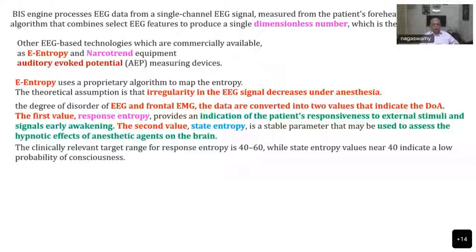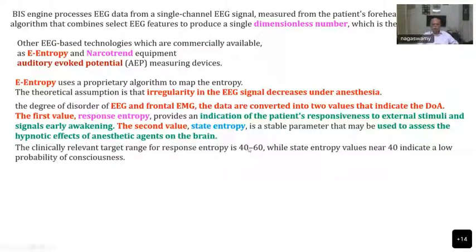The clinically relevant target range for response entropy is 40 to 60. The BIS monitor also has a similar target value. If a patient is under the correct plane of anesthesia, you achieve a number between 40 and 60. When the number increases towards 100, the patient is waking up. When the number drops below 40, it indicates the patient is going deeper and there is brain depression.